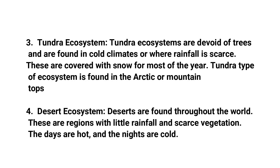Next is the tundra ecosystem. Tundra ecosystems are devoid of trees and are found in cold climates or where rainfall is scarce. These are covered with snow for most of the year, and this type of ecosystem is found on mountain tops. Finally, the desert ecosystem is found throughout the world. These are regions with little rainfall and scarce vegetation. The days are hot and the nights are cold.